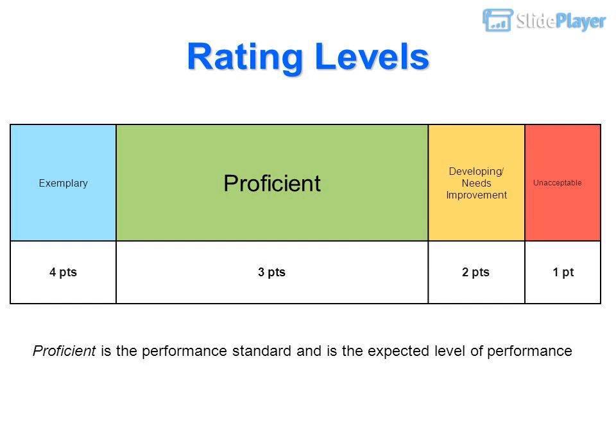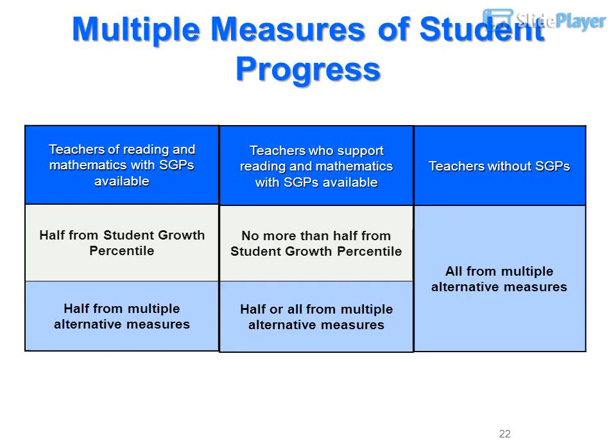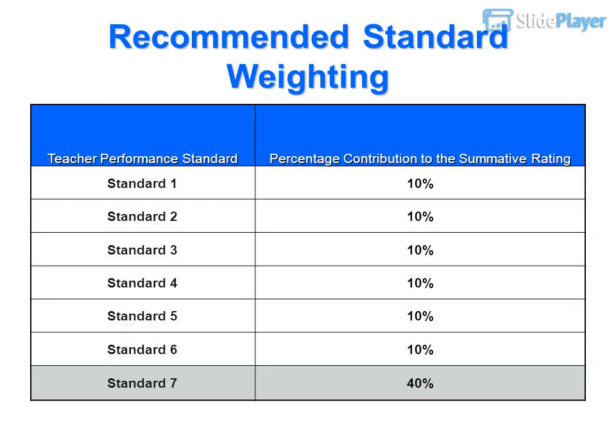Rating levels and point values: Exemplary — 4 points; Proficient — 3 points; Developing/Needs Improvement — 2 points; Unacceptable — 1 point. Proficient is the performance standard and the expected level of performance. Regarding multiple measures of student progress: teachers of reading and mathematics with student growth percentiles (SGPs) available use half from SGP and half from multiple alternative measures. Teachers who support reading and mathematics with SGPs use no more than half from SGP and half or all from multiple alternative measures.